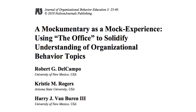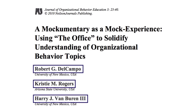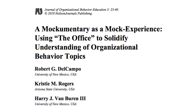Just below that we have the date of publication, which is 2010. Underneath all of that information we have the title of the article, and just below that we have the names of all three authors as well as what universities they work for. If a DOI exists, it will usually be at the bottom of the first page of the article. In this case I have no DOI, so I will need to use the permalink.